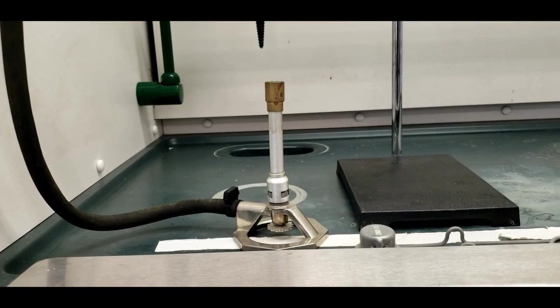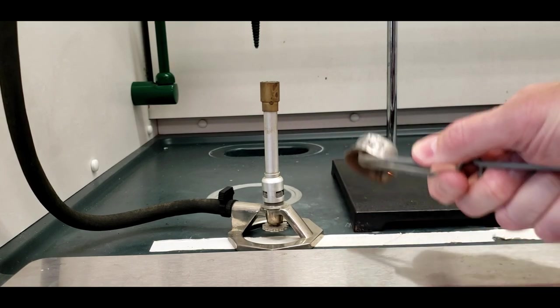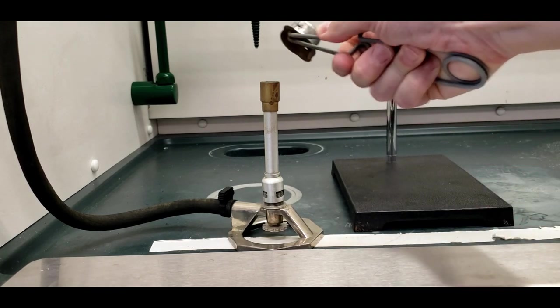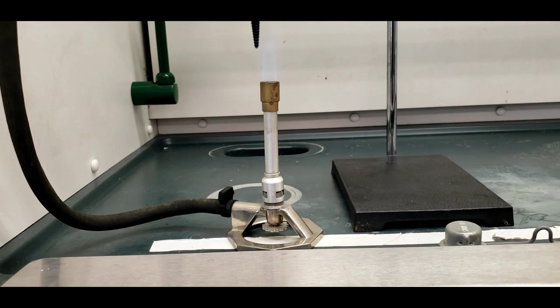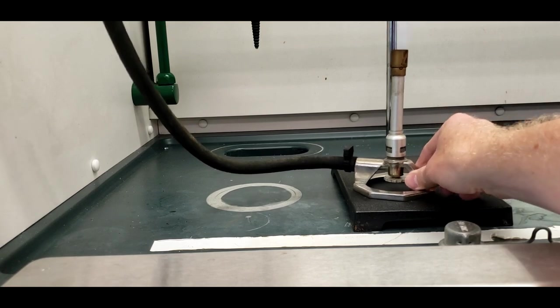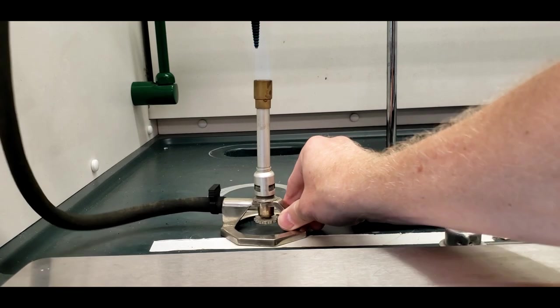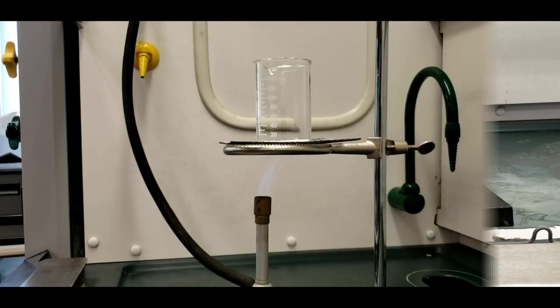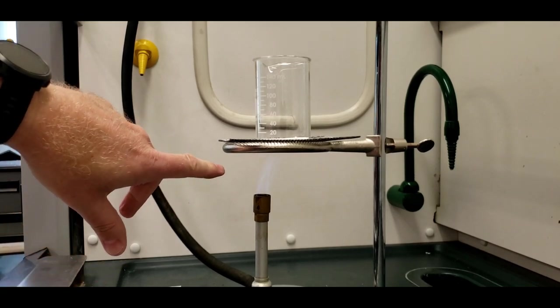So here's our Bunsen burner. We're going to get this going. So I take the striker and turn on the gas. And keep going there. Yeah, I think you can see that. And actually we'll get the beaker on there first. You can see that the flame is on here. And it's touching the bottom.